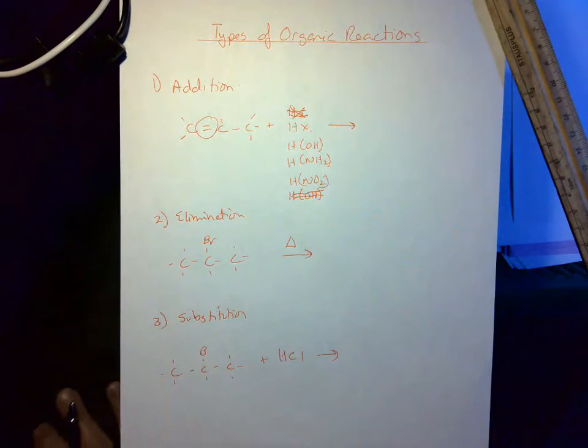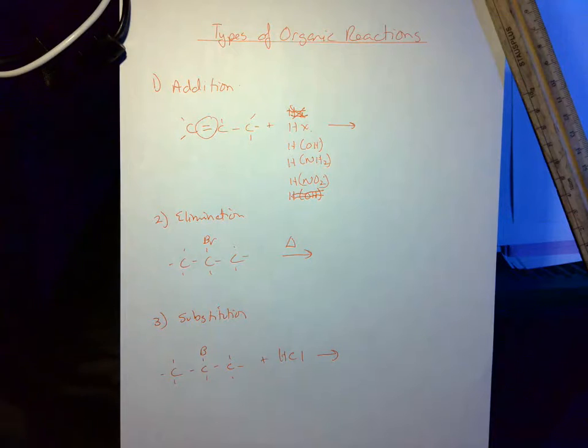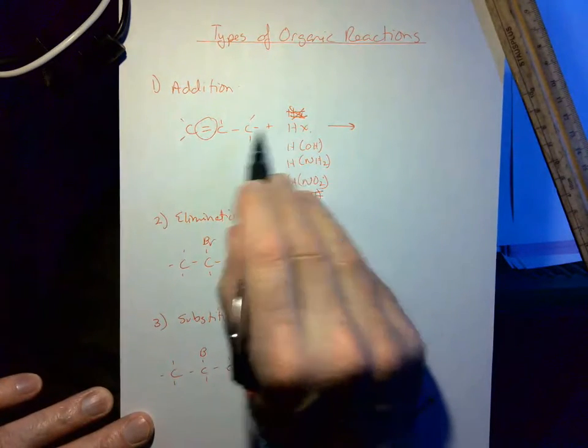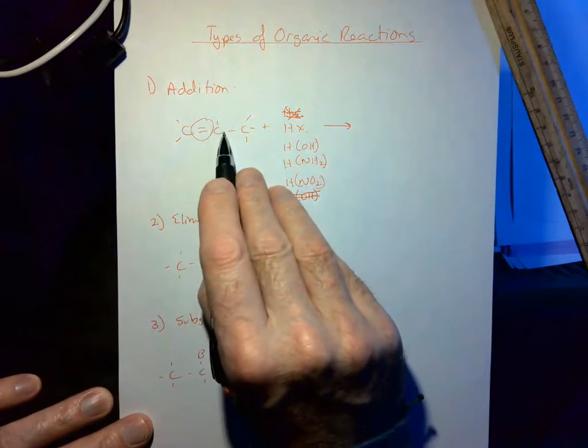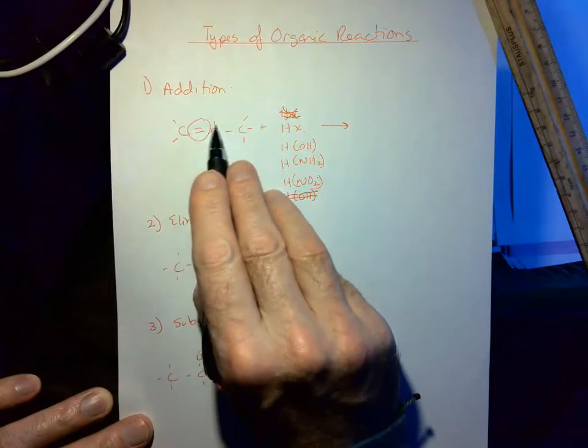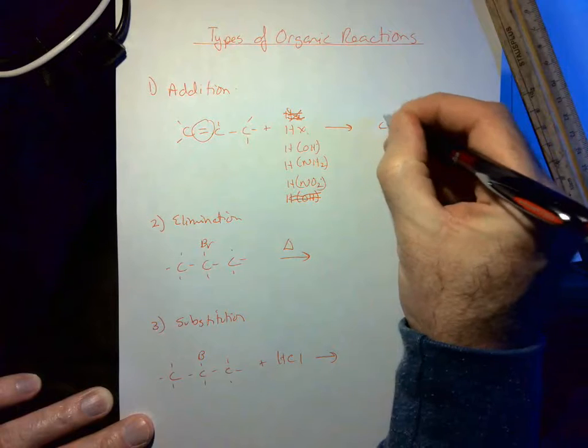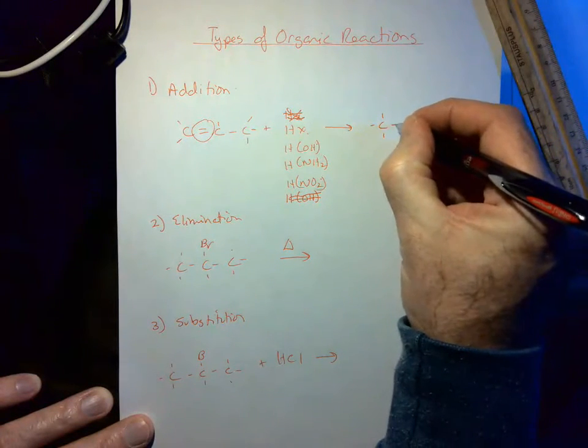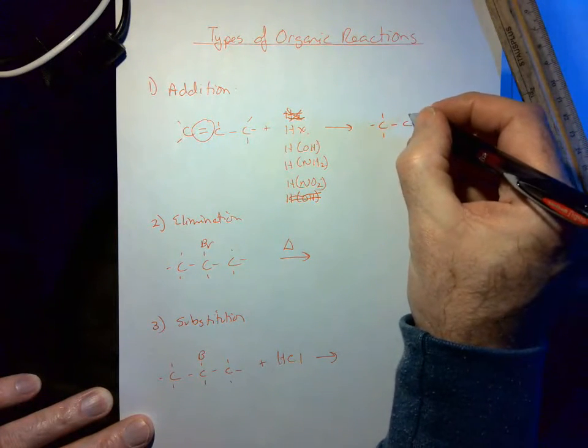Now when that happens, there's a rule called Markovnikov's rule where the H will go to whichever carbon has the most hydrogens. In this case, this one has two and this has one. That being said, it won't always happen like that.